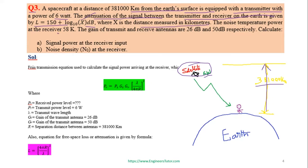The noise temperature at the receiver is 58 Kelvin. We can convert between Kelvin and Celsius if needed. The gain of the transmitting and receiving antennas are 26 dB and 50 dB respectively.